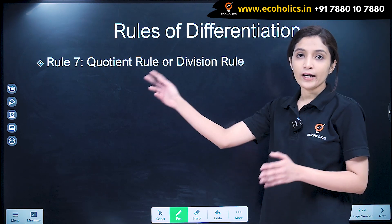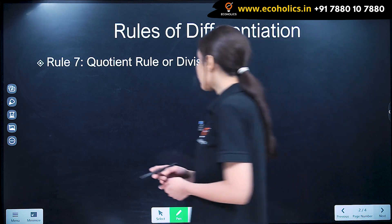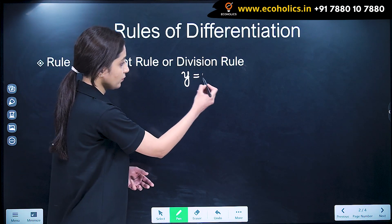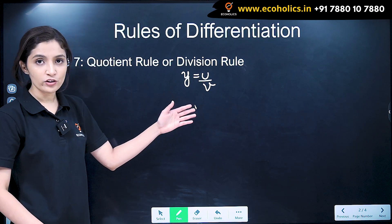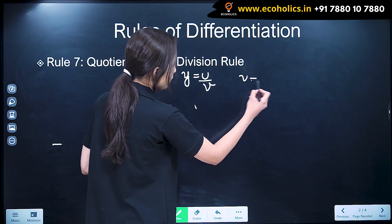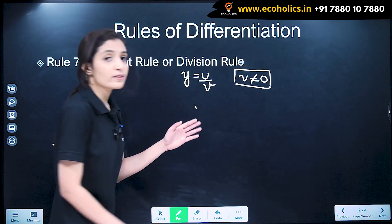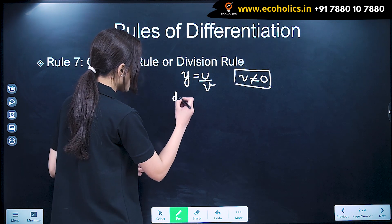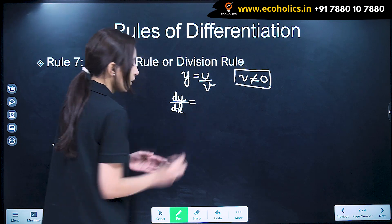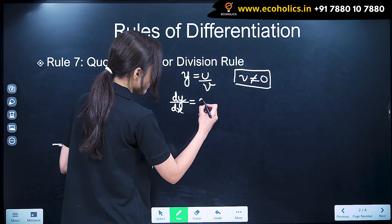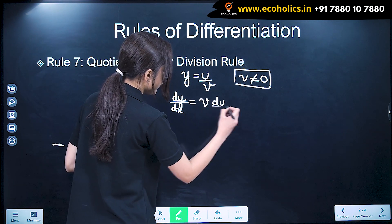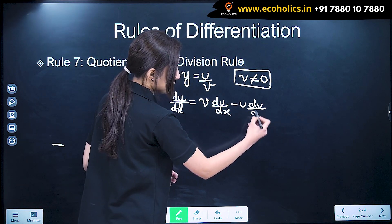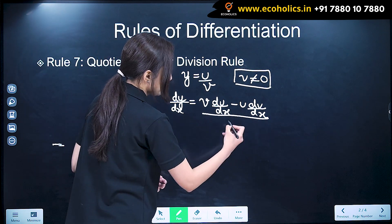Rule number 7: the quotient rule or division rule of differentiation states that when y is equal to u divided by v, where u and v are differentiable functions of x and v is not equal to 0. v is not equal to 0 because if v is equal to 0, this will become indeterminate. So in this case, dy/dx is equal to v·(du/dx) minus u·(dv/dx), divided by v squared.